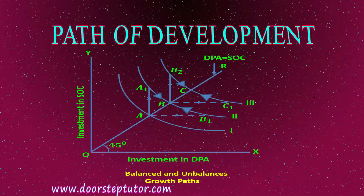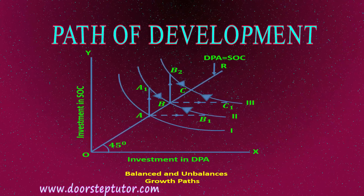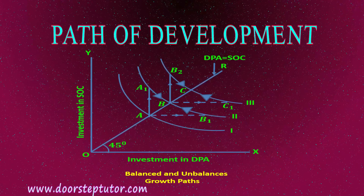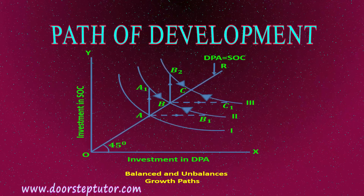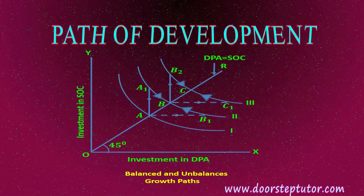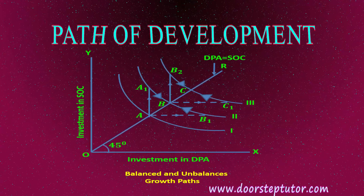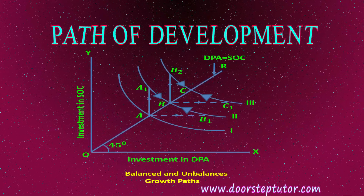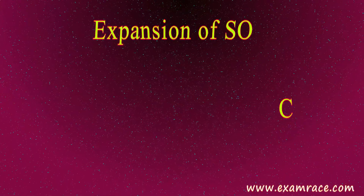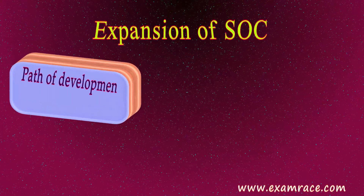Hirschman believed that SOC and DPA cannot be expanded simultaneously, because in underdeveloped or less developed countries there is always a shortage of resources. Therefore, the problem before the government in these countries is to determine the sequence of expansion that will maximize investment and output.